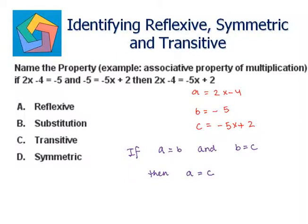This property, where a, b, and c belong to the real numbers, is known as the transitive property. So, C transitive is the answer.